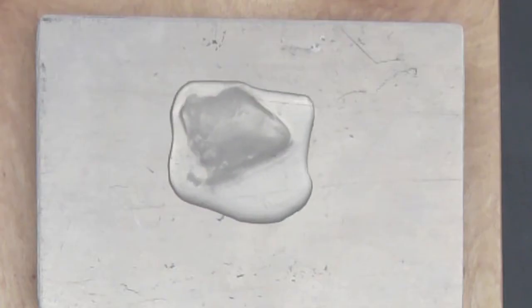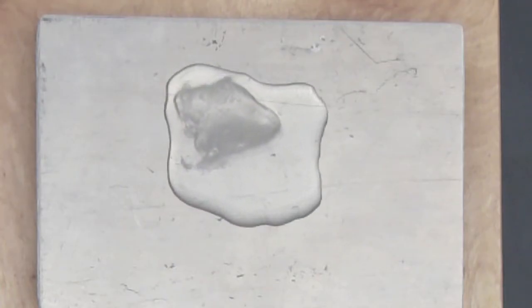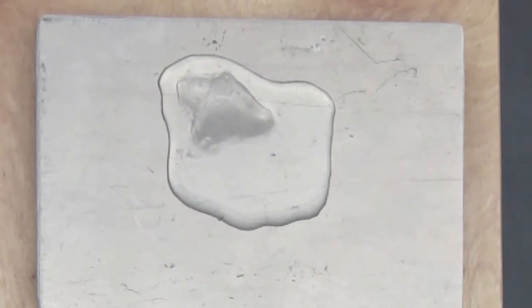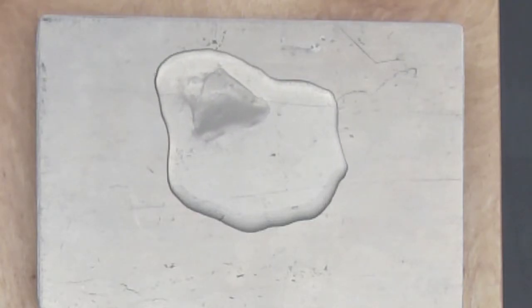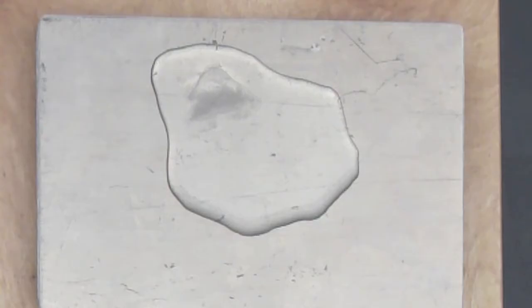So this is just the opposite of the previous demonstration. In this case, the metal is giving up thermal energy to the ice cube. The ice is warming up and melting, and the metal plate is actually cooling off.